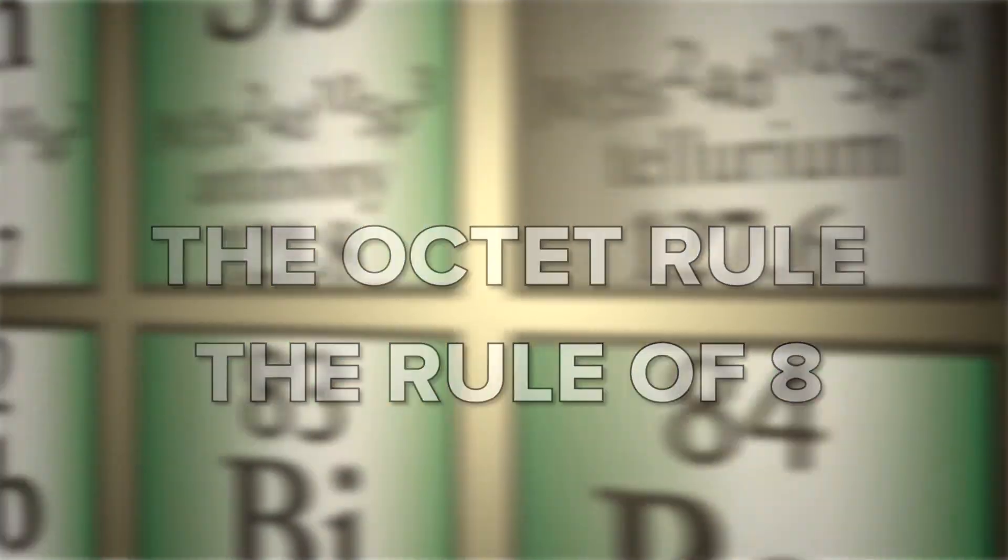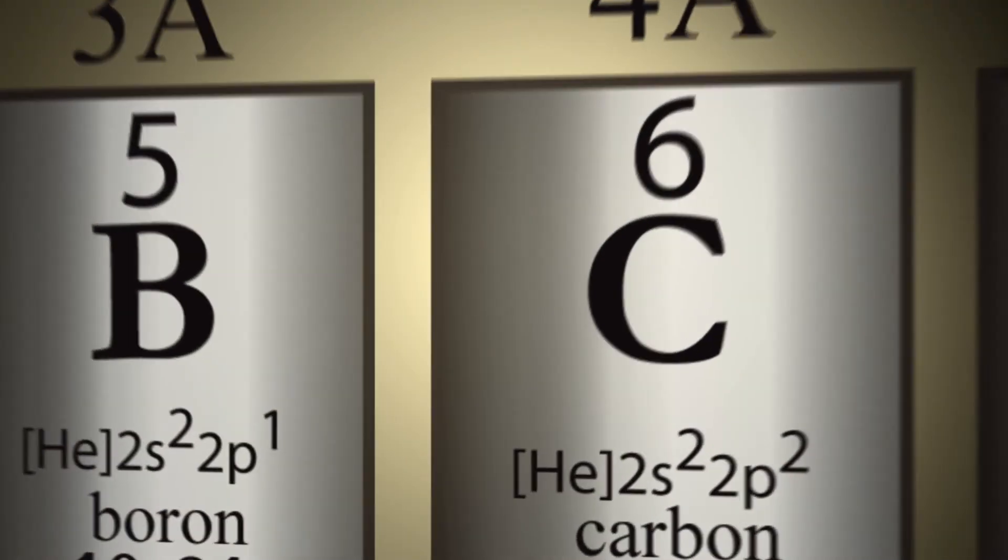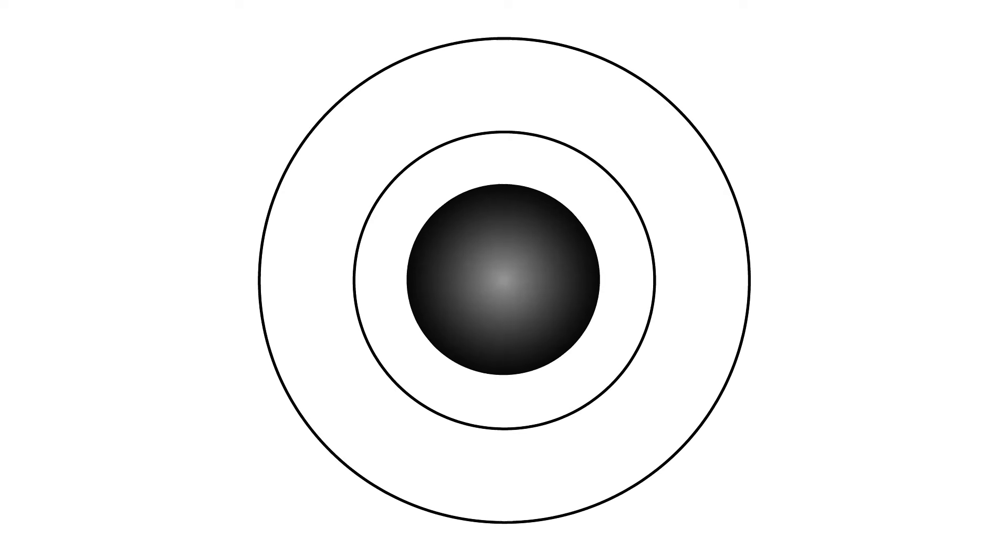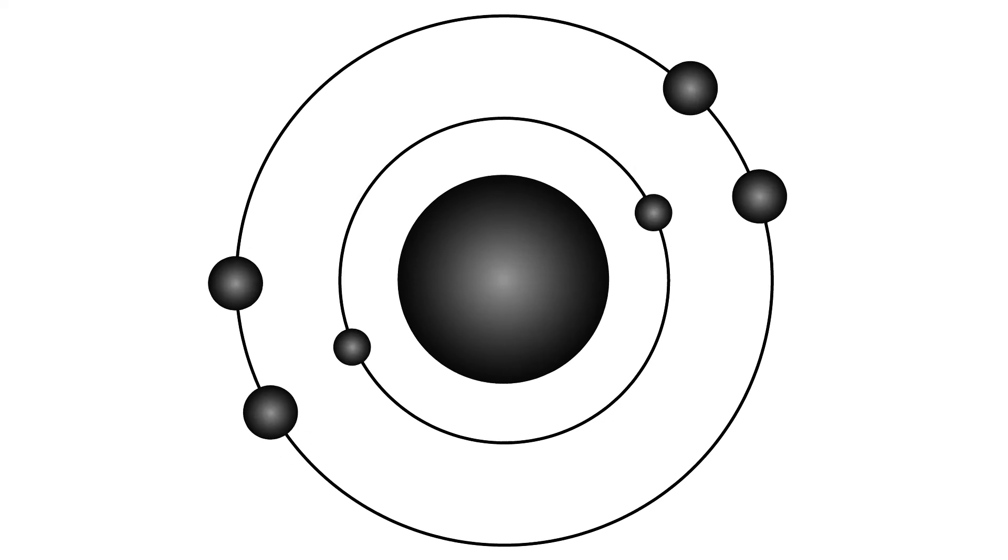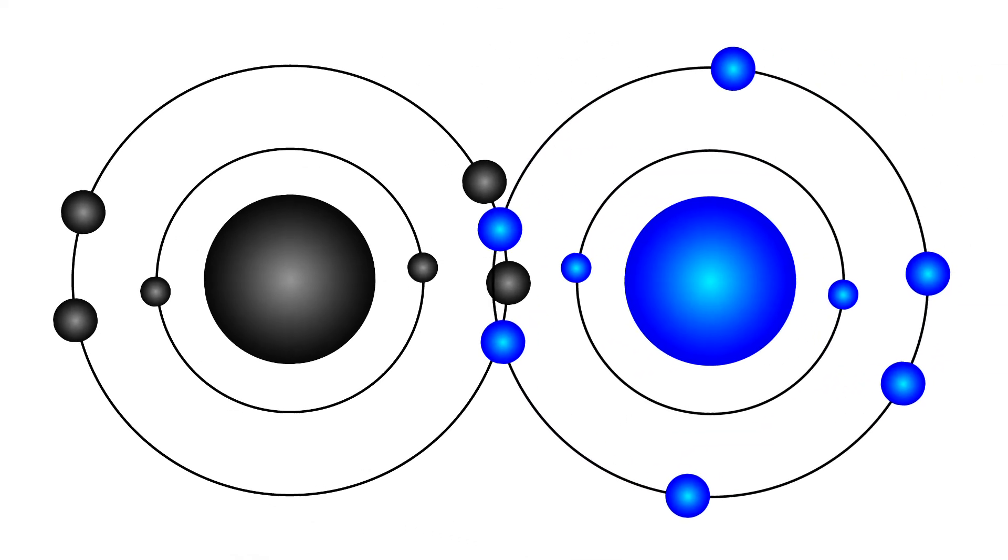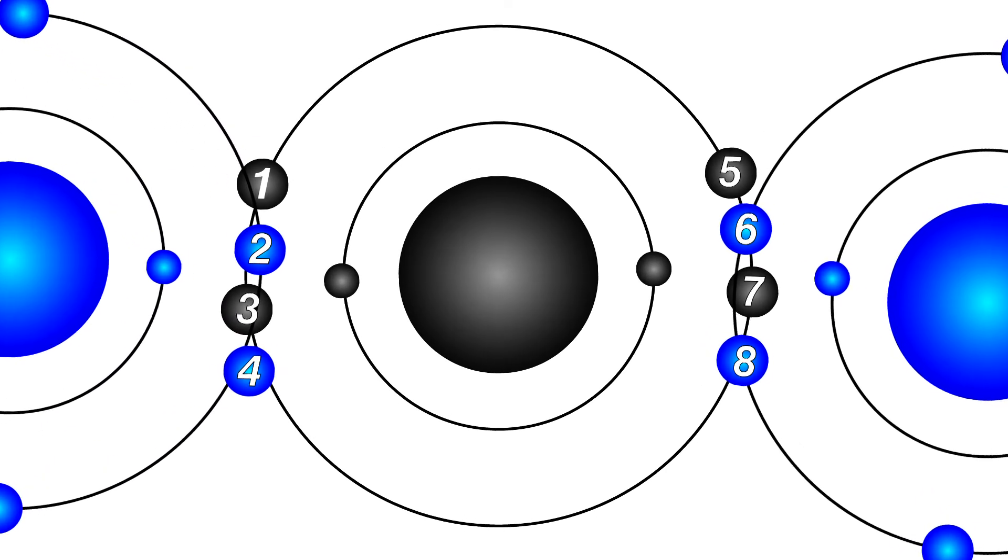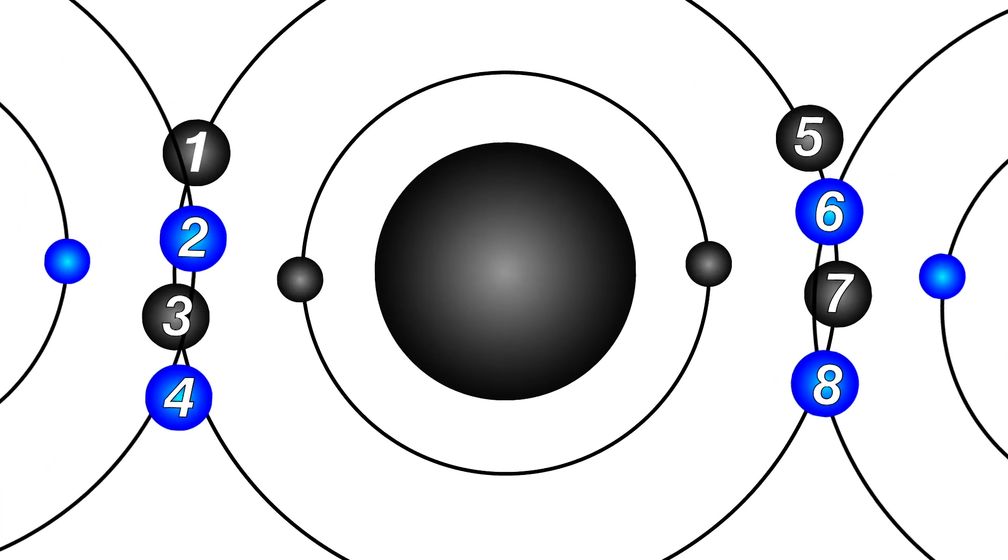A rule worth knowing because it applies to most elements in the periodic table, including the most common: carbon, nitrogen, and oxygen. OK, hit refresh here. Atoms have a center, a nucleus, and a certain number of electrons that orbit the nucleus in shells. Molecules are formed when atoms combine. Atoms of most elements tend to combine so they each have eight electrons in their outermost shell.